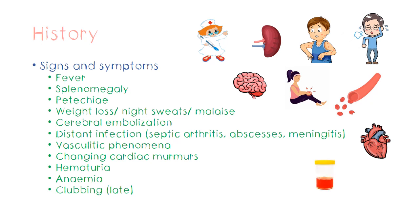Hematuria can be seen when there are renal infarctions due to embolization. Anemia can be caused two ways: first, blood travelling through damaged valves causes destruction of red cells causing hemolytic anemia; second, anemia of chronic disease. A late feature usually seen in subacute infective endocarditis is clubbing — bulbous enlargement of the ends of the fingers or toes due to vascular proliferation in the nail beds. The exact mechanism is unknown but secretion of growth factors from chronically hypoxic tissue may be one method.